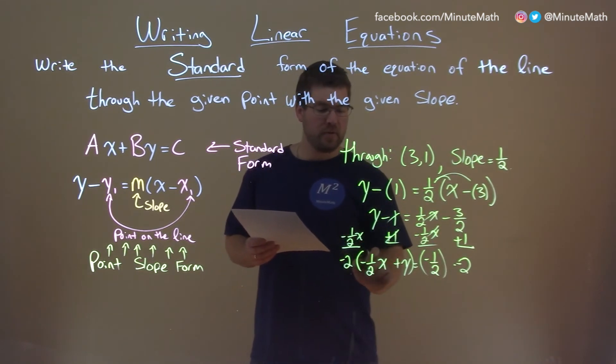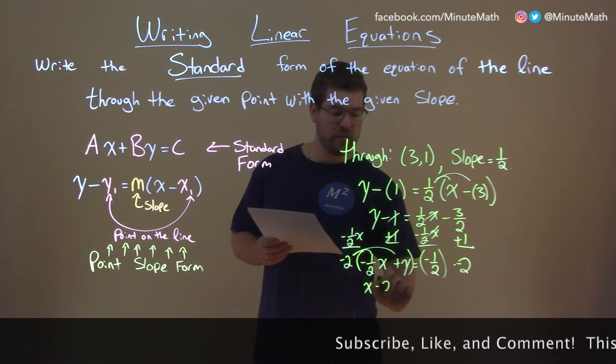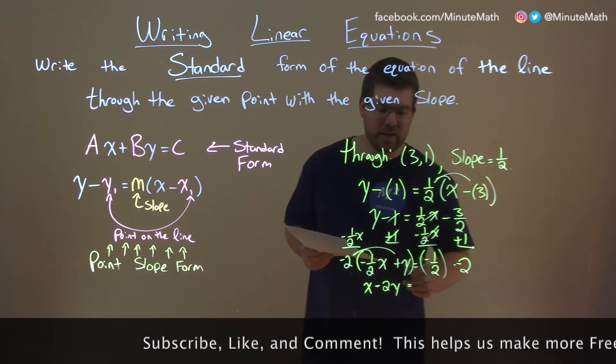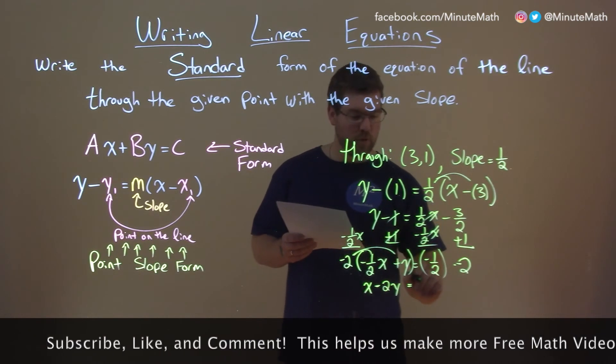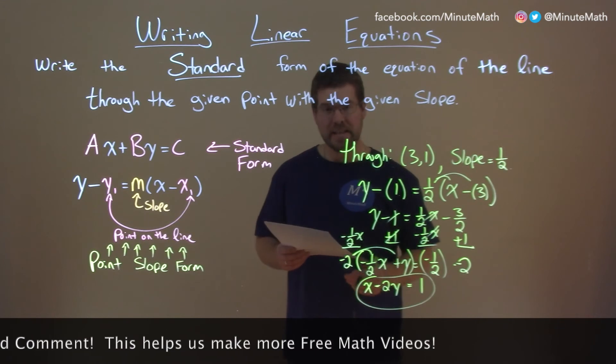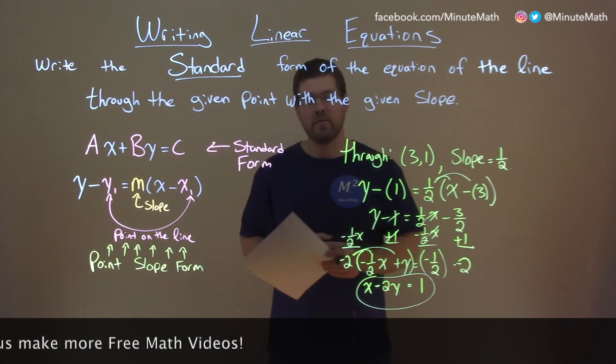So -2 times -1/2 is positive 1, we can just write x here. Distribute the -2 to the y, and we have -2y. Over here, -1/2 times -2 is positive 1. And now, our answer is in standard form, nice and neatly: x - 2y = 1, and that is our final answer.